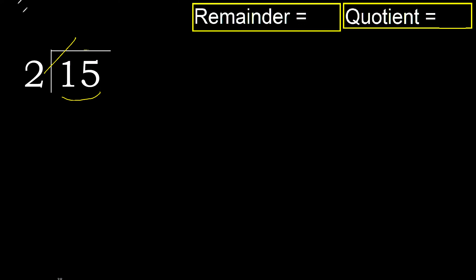2 multiplied by 8 is 16. 16 is greater, so multiply by 7: 14 is not greater. Okay.